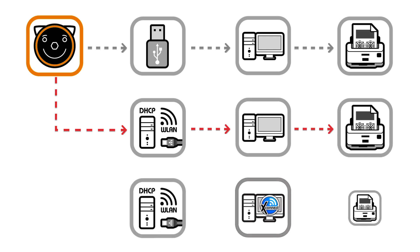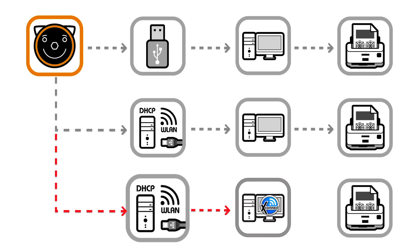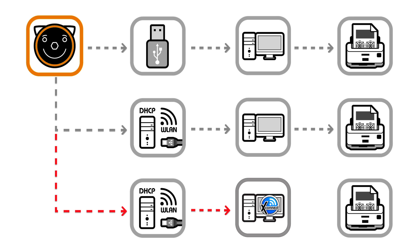The third option is automated printing of measurement reports by using the free software PlusOptics Connect. The PlusOptics device must be connected to the network via LAN or wireless LAN. The measurement reports stored on the USB stick can now be filtered and printed out automatically on a printer that is connected to your workplace computer.